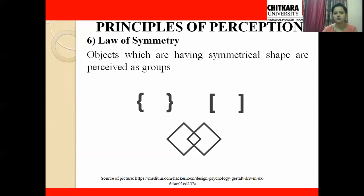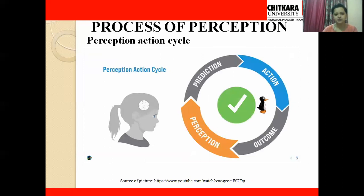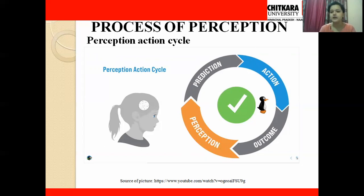Now let's move to our next topic: the process of perception. Perception occurs when we provide focus or attention to particular stimuli. We focus on and sense the stimuli, send that information to our brain, and the brain acts on those stimuli to find the outcome. That is how perception occurs. Let's look at this with one more picture.